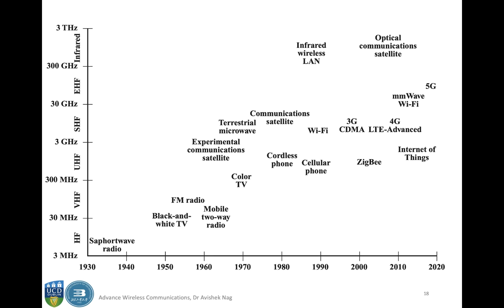Let's look at the technology timeline and the different frequencies these technologies operate on. In the 1930s and 1940s, shortwave radio operated in the high frequency region between 3 MHz and 30 MHz. Black and white TV, FM radio, and mobile two-way radio came up in the 1950s and 60s, operating in the 30 MHz to 300 MHz window.